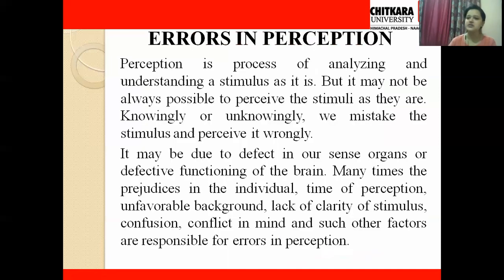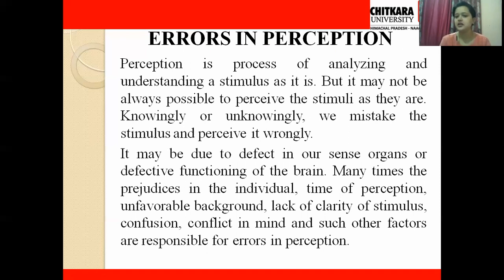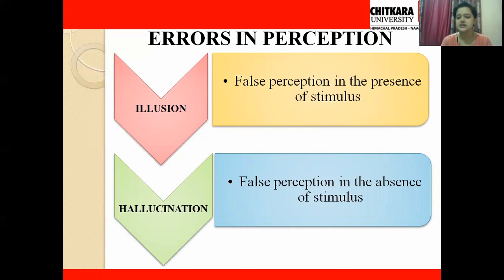Let's move to our next topic: errors in perception. All the factors we studied earlier can cause errors in perception. Perception is the process of analyzing and understanding a stimulus as it is, but it may not always be possible to perceive stimuli as they are. Knowingly or unknowingly, we mistake the stimulus and perceive it wrongly. This may be due to defects in our sense organs or defective brain functioning, as well as prejudices, unfavorable background, lack of clarity of stimulus, or confusion. There are two errors: illusion and hallucination.